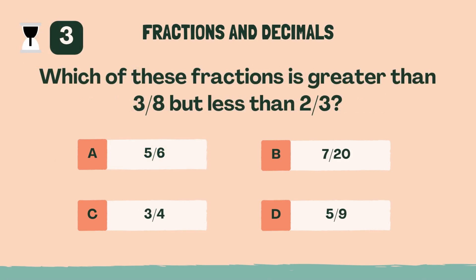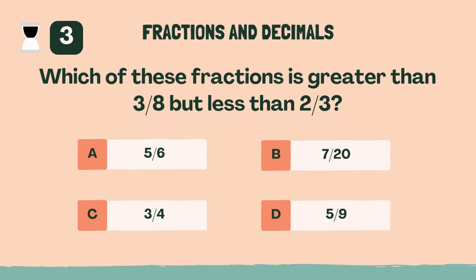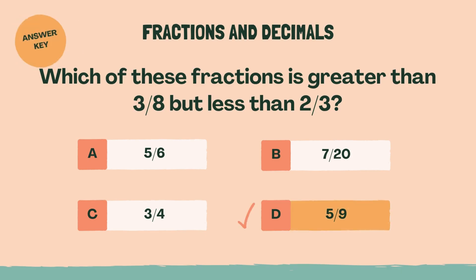Which of these fractions is greater than 3 eighths but less than two-thirds? D, five-ninths.